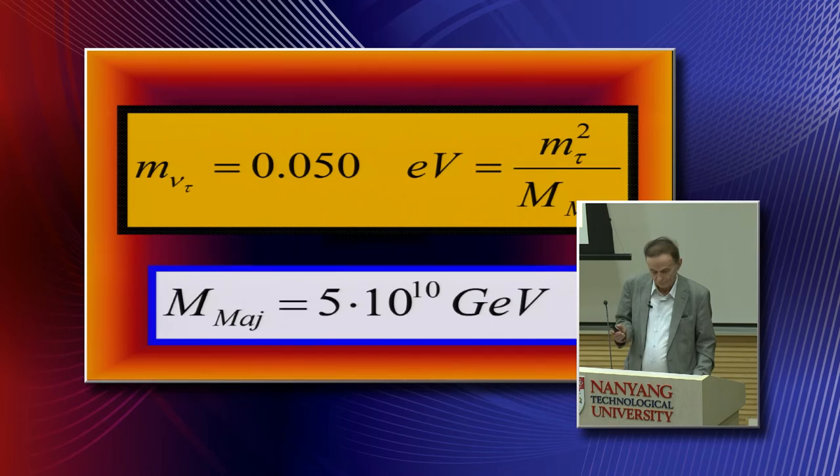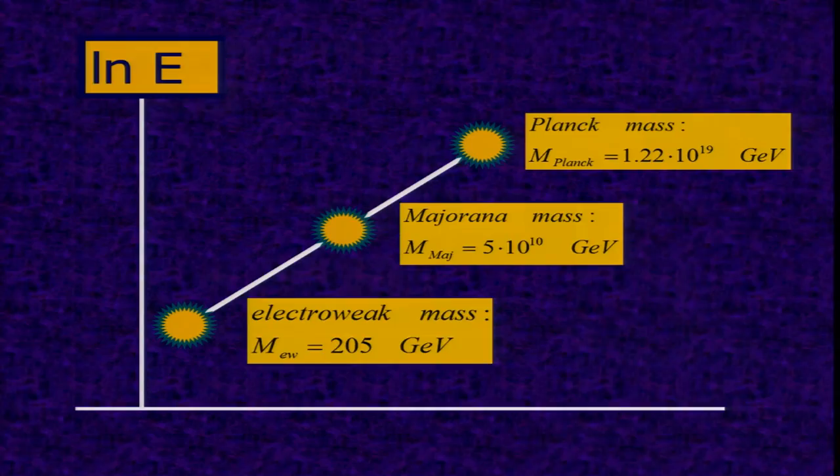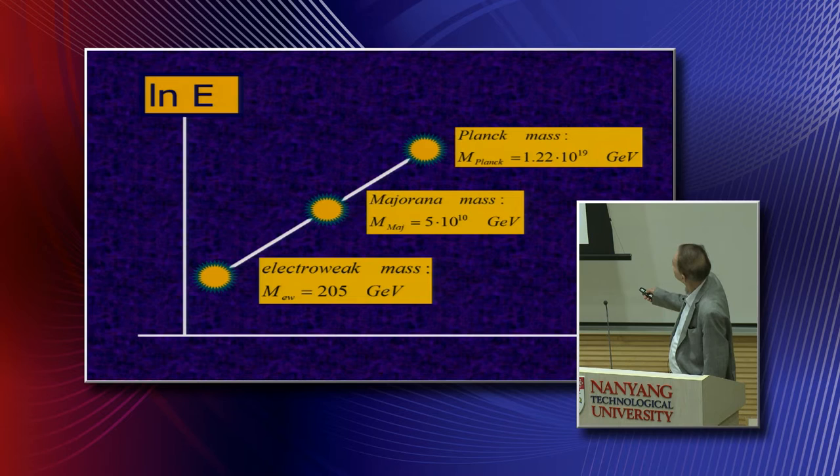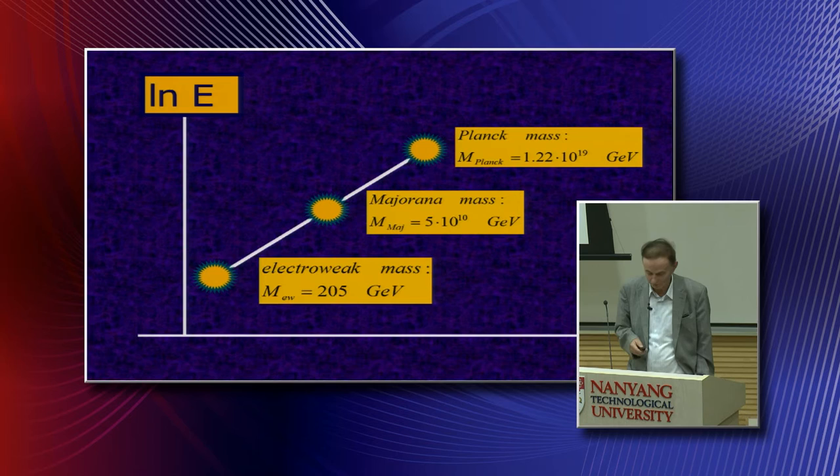If I use the mass for the tau neutrino, which I calculated before, and say this is now given by the square of the tau lepton divided by this heavy Majorana mass, I can calculate the Majorana mass, which is of the order of 10 to the 10 GeV, quite heavy. So on the logarithmic scale, you see it is basically a straight line from the electroweak mass scale of the order of 150, 200 GeV here, going up to the Majorana mass term, going up to the Planck mass term of 10 to the 19 GeV. That might be interesting for some theory, but I don't care too much about it. It's just a fact.